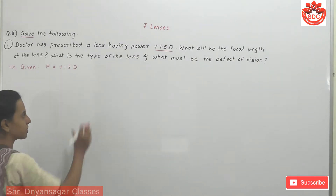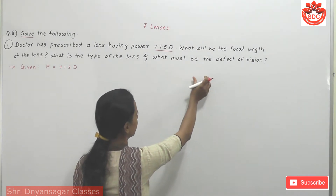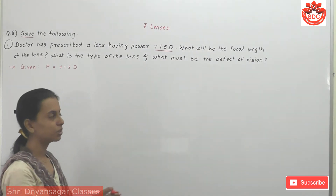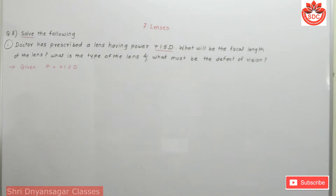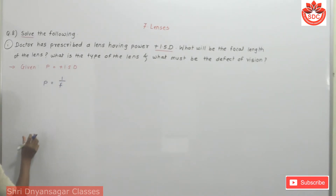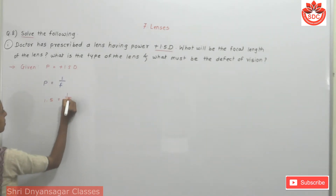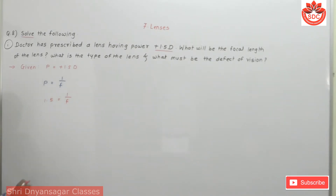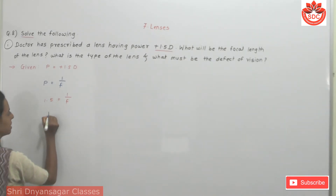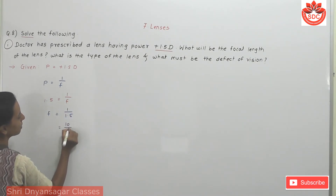What is the type of lens? Using the formula, one upon f equals P, so P is equal to 1.5. We interchange to get f is equal to 1 upon 1.5. Removing the decimal point, we get 10 upon 15.